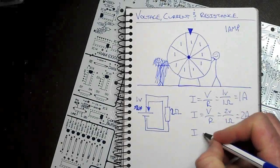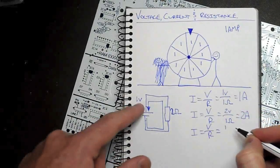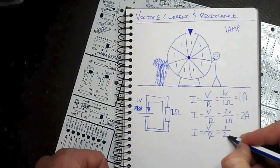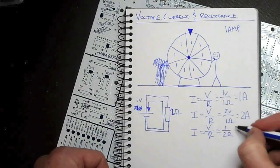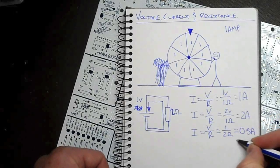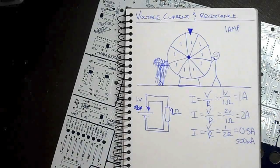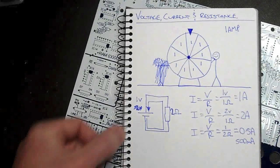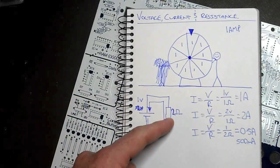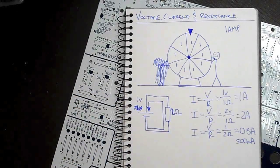So current equals voltage divided by resistance. We're back to 1 volt, but now we've got twice as much resistance in the circuit, 2 ohms. I'm now going to get half an amp, or 500 milliamps. Voltage stayed at 1 volt. My resistance has increased, or it's doubled, so now my current is less. It's only 500 milliamps.